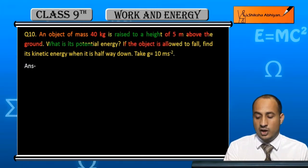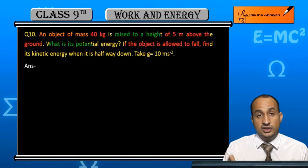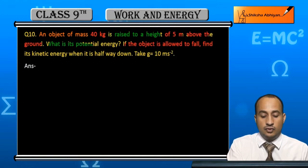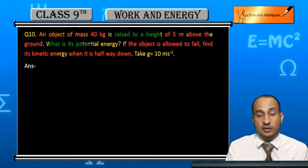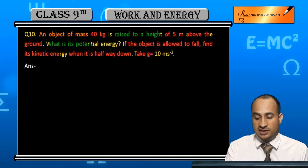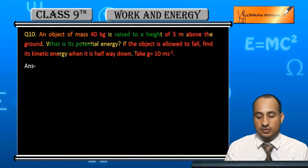Also, if the object is allowed to fall, find its kinetic energy when it is half way down. Take g is equal to 10 meter per second square.